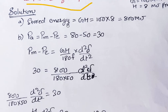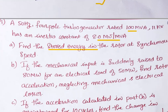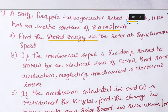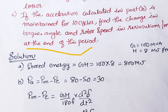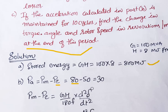The stored kinetic energy = G × H = 100 × 8 = 800 megajoules. Due to the disturbance, mechanical power (driving force) = 80 MW and electrical power (opposing force) = 50 MW. The net accelerating power = 80 − 50 = 30 MW, which is positive since the driving force exceeds the opposing force.